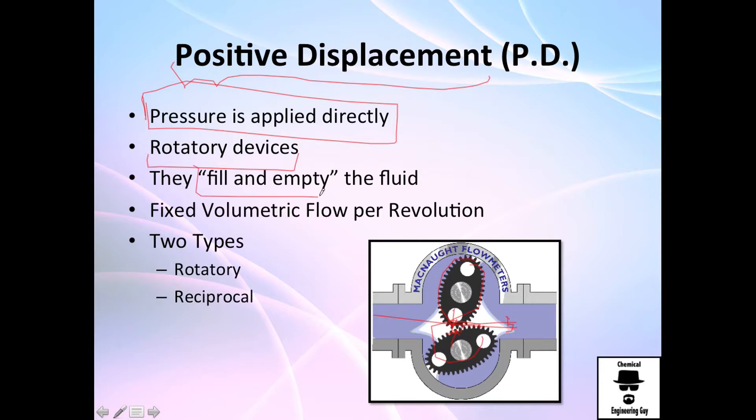They fill and empty the cavity. They have a fixed volumetric flow rate per revolution, so if you know how many revolutions per minute you have, you may calculate the volumetric flow rate.